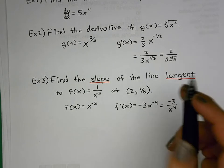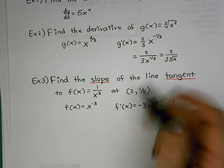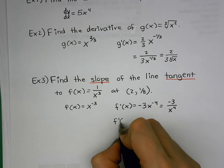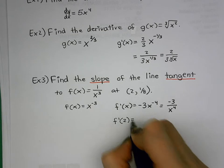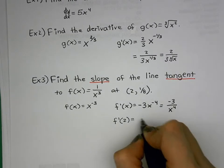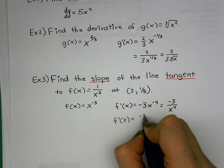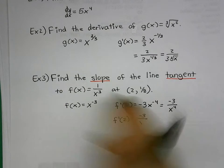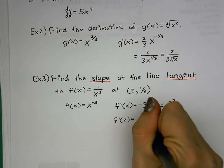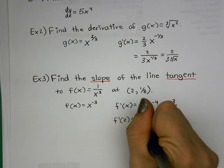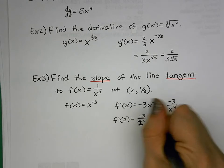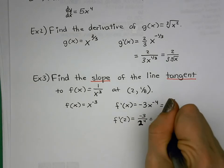Since we're given the point x = 2, we plug it into our derivative: −3 divided by 2 to the fourth, which is −3/16. That's the slope of the tangent line.